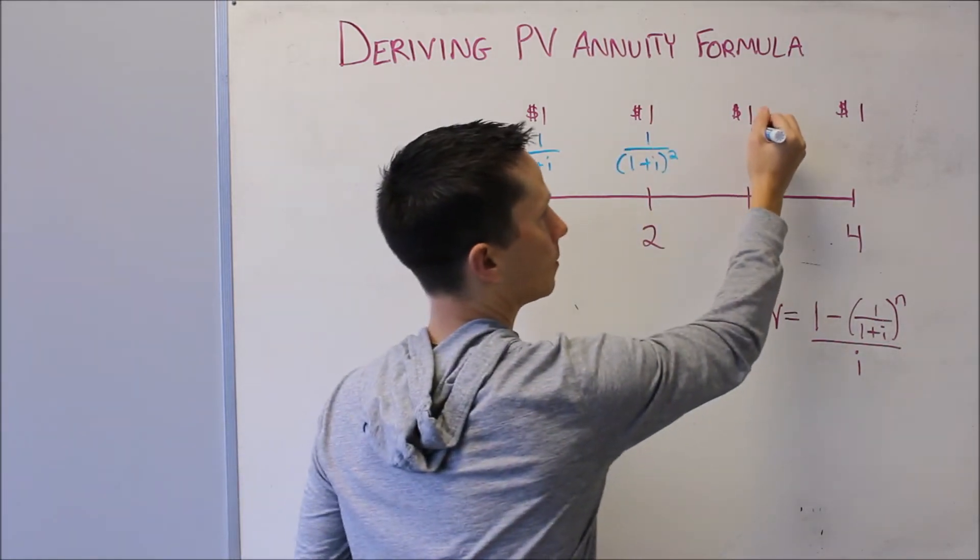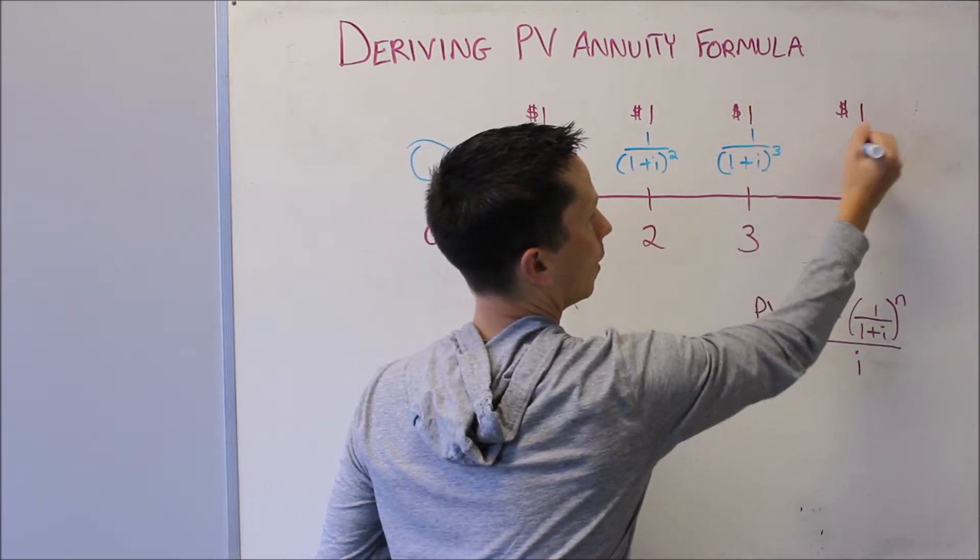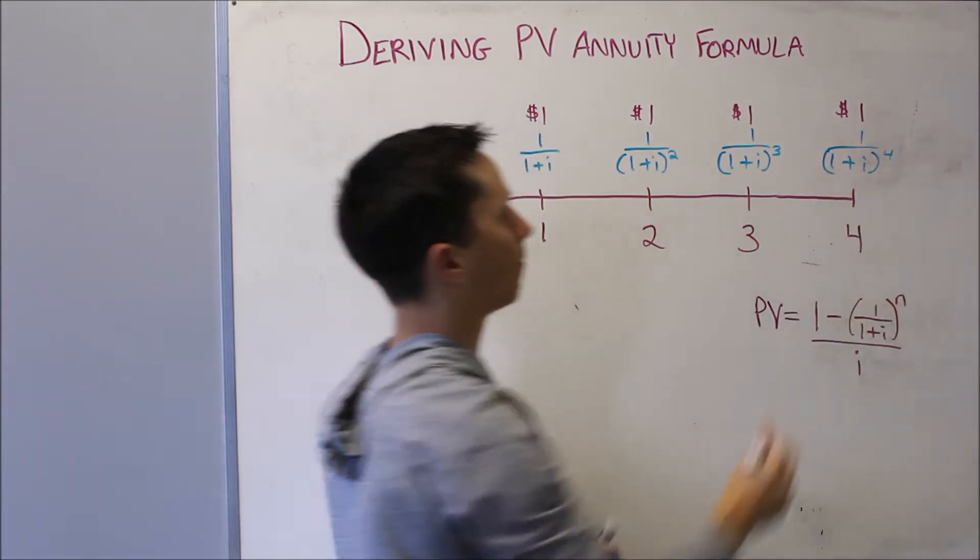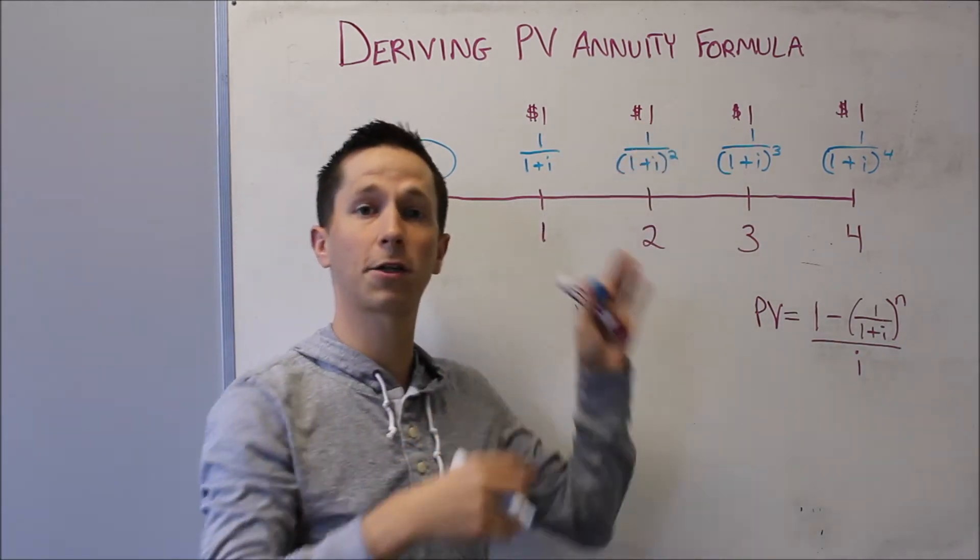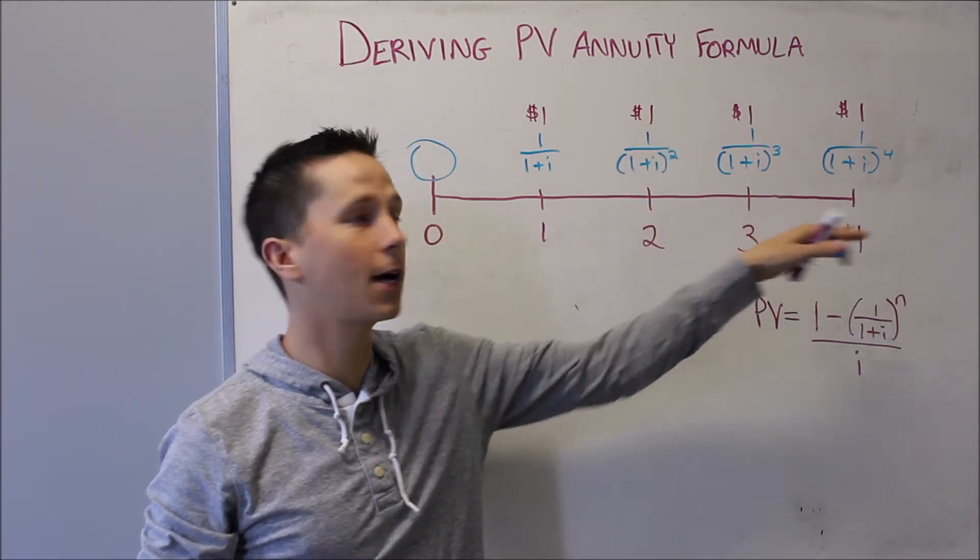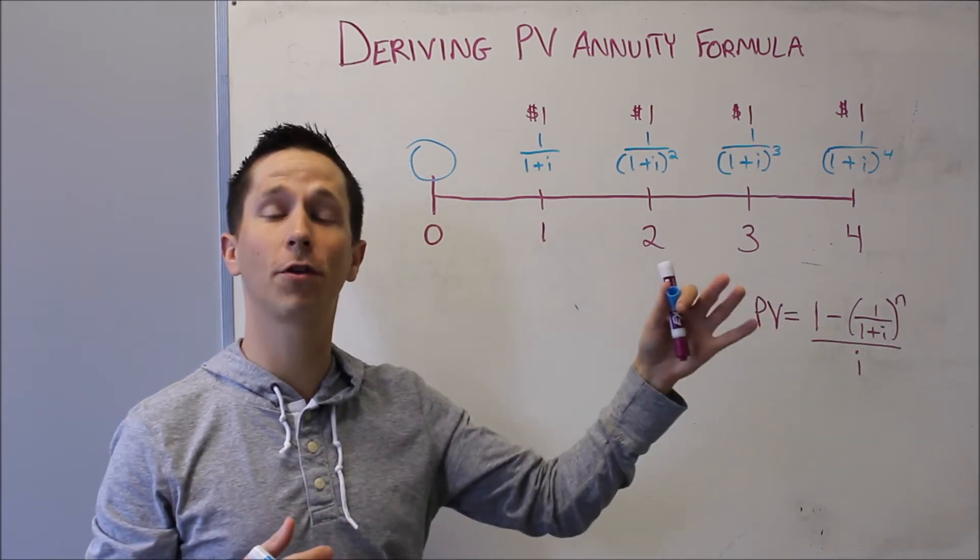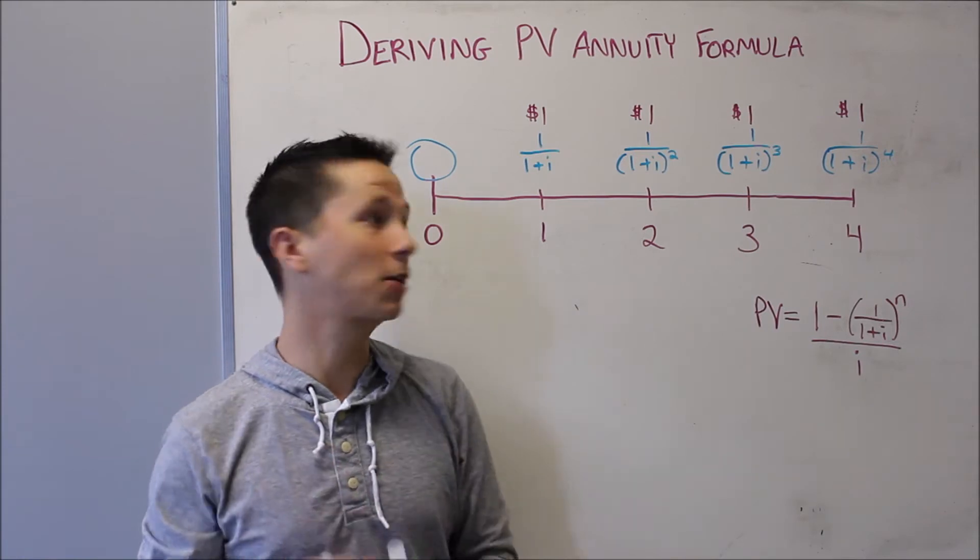Same thing with this one. 1 plus i cubed, and 1 over 1 plus i to the four. Those are the discounted cash flows. So these are the raw cash flows. You actually will get paid a dollar at each of those times. But in blue, these are the discounted cash flows, meaning the value of those dollars out in the future brought back to today. So what they're actually worth today.